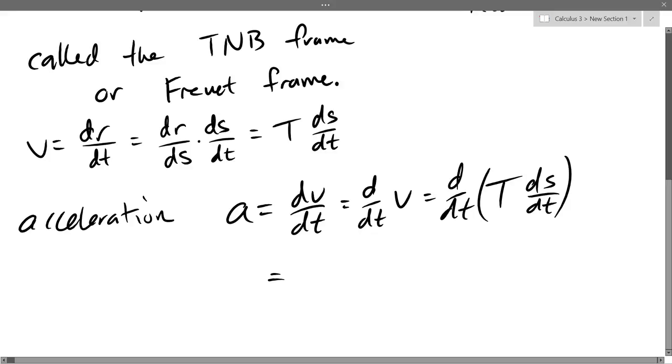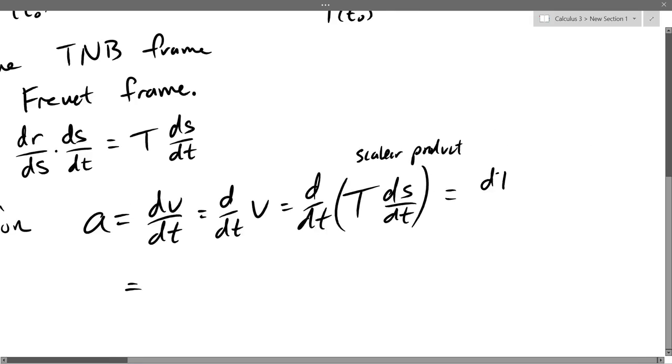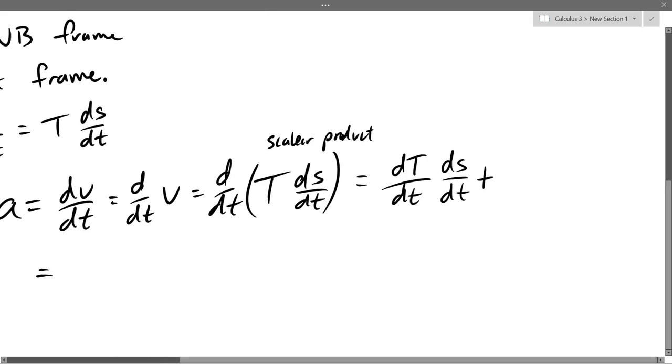And this is a scalar product right here. So we can use the product rule. So I'm going to take a T derivative of this vector. On the left is a vector, the T is a vector, ds/dt is a number. So I'm using the product rule right here. So I can write this as, I'll do the product over here, dT/dt times ds/dt plus T times d/dt of ds/dt. That's a little bit cramped.